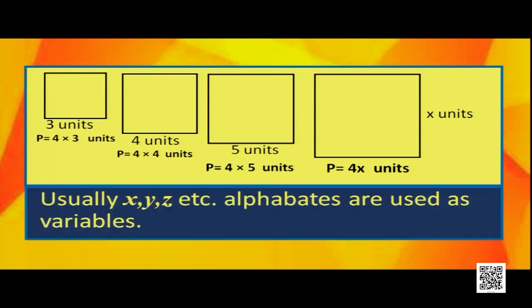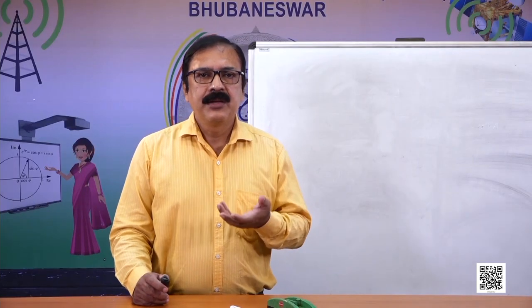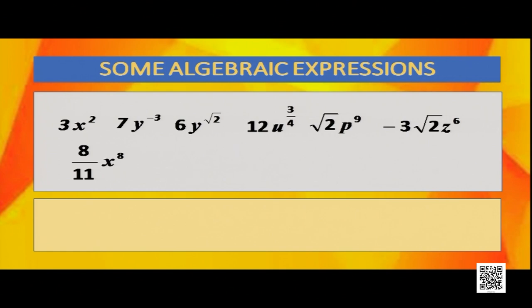Usually in case of a variable, you use the alphabets x, y, z, etc. Let us see some more algebraic expressions: 3x, 3x square, 7y to the power minus 3, 6y to the power root 2, 12u raised to the power 3 by 4, root 2 p raised to the power 9, minus 3 root 2 z raised to the power 6, and 8 by 11 x raised to the power 8.